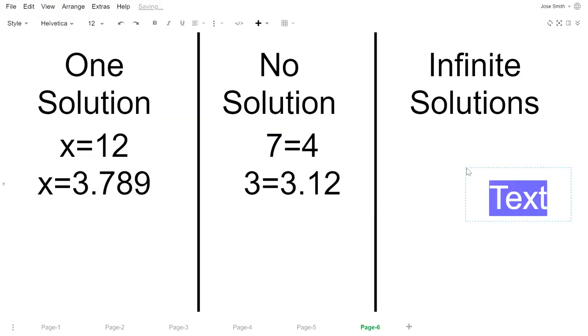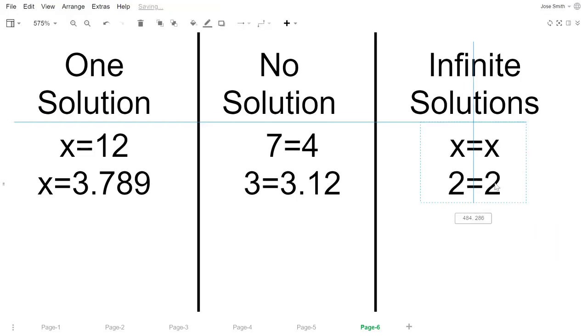And we have infinite solutions. That means that one side is the same as the other. You could always end up with maybe 2 equals 2, so x equals x, 2 equals 2, whatever the case. That means that x can be any solution.